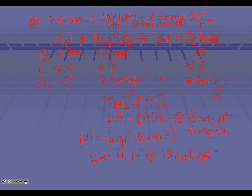The pH went up quite a bit with just a little bit of our strong base added in. This is a shortcut method — if you wanted to, you could work an ICE problem or use Henderson-Hasselbalch. But because our weak acid equals our conjugate base, there's a shortcut we can take. So now let's look at what happens when we take it up to 50 milliliters.